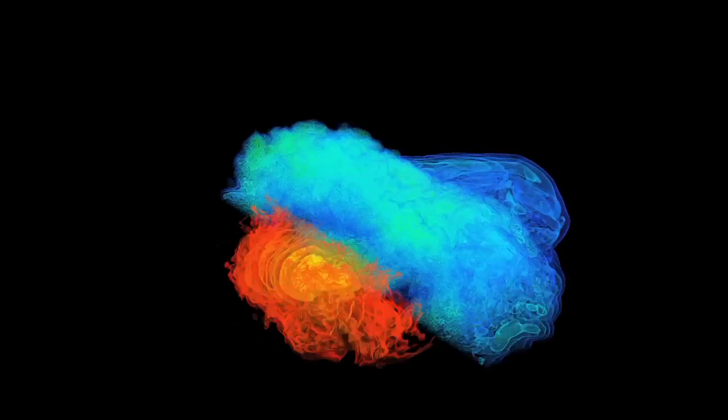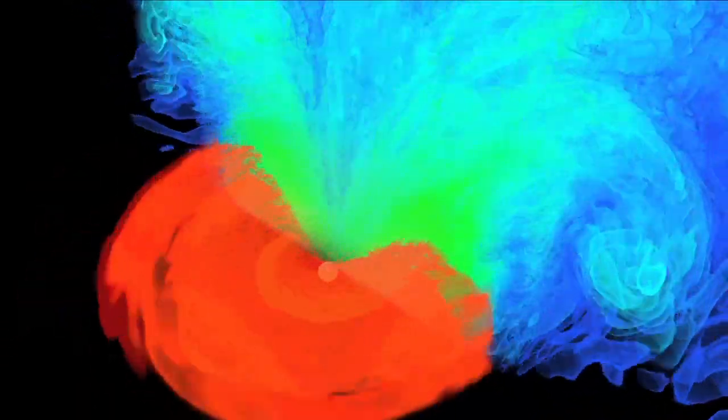The new simulation shows two neutron stars merging to form a black hole surrounded by super-hot plasma. On the left is a map of the density of the stars as they scramble their matter into a dense hot cloud of swirling debris.